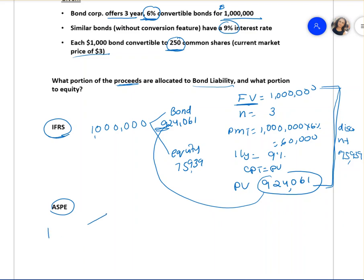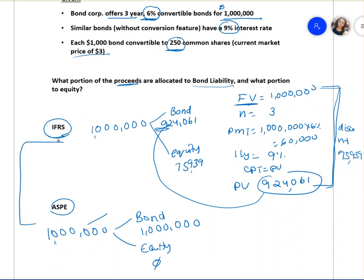Under ASPE, if the company received one million dollars, they make it simple: one hundred percent goes to the bond liability because the equity portion is zero — their shares are not listed on the market. However, ASPE companies can also follow the IFRS approach and calculate a present value with an equity portion, but most companies keep it simple and allocate everything to the bond.